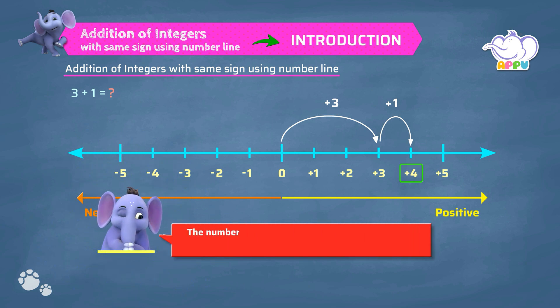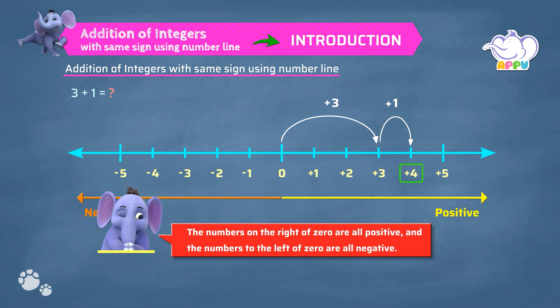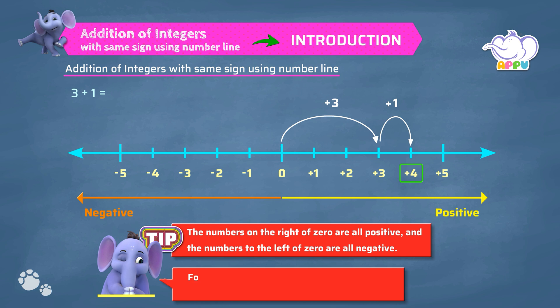The numbers on the right of 0 are all positive and the numbers to the left of 0 are all negative. For positive numbers, we do not use plus sign.